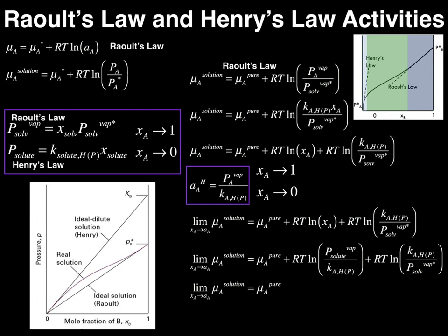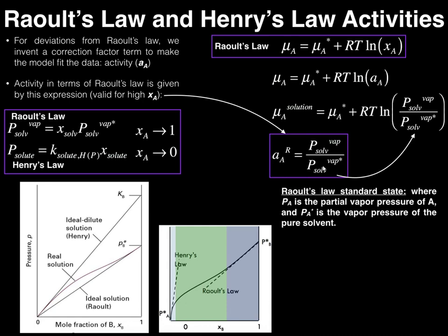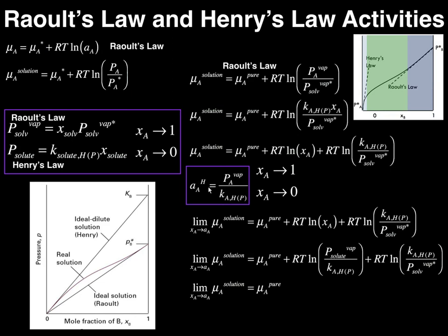When do you use each activity? First, define your species. Say species A in your two-component system is ethanol. Look at the mole fraction: if there's mostly ethanol, the mole fraction is high and you use the Raoult's law standard state activity. But if the mole fraction of ethanol is very low — say 0.3 — then ethanol is your solute and you use the Henry's law standard state activity.